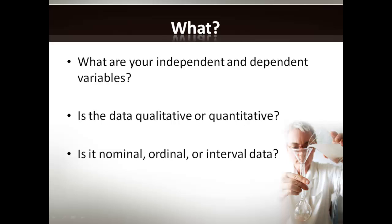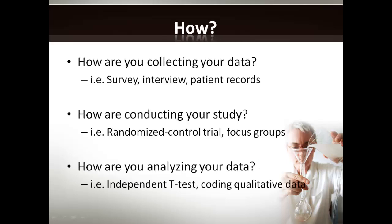The next thing to consider is the what. What are your independent and dependent variables? Is your data qualitative or quantitative? Is it nominal, ordinal, or interval data? These are very important in terms of deciding how you're going to statistically analyze your data later on. The last thing to consider for your methodology is the how. How are you collecting your data — via surveys, interview, looking at patient records? All of these have implications in terms of certain approvals you need to get, for example, certain approvals for accessing patient records. You must also look at how you're conducting your study — are you looking at randomized control trials, or qualitative assessment using focus groups? And finally, consider how you're analyzing your data, whether this is a statistical analysis using a variety of tests such as an independent t-test, or whether you're coding your information if it is qualitative data.